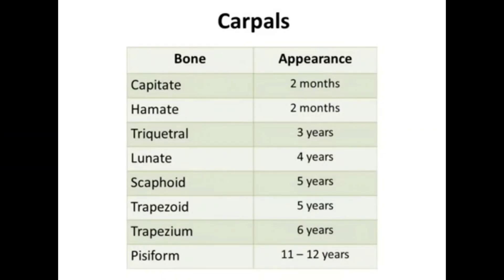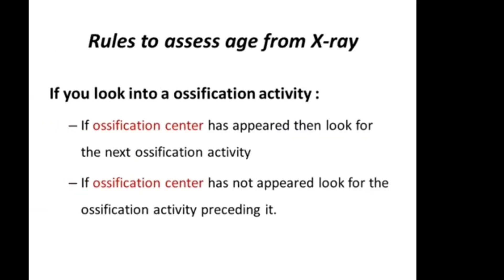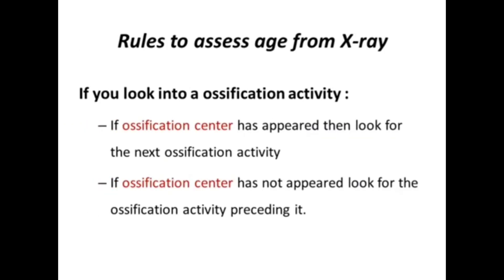So my mnemonic is Chatri Lust Trap: Chatri — capitate, hamate, triquetral; Lust — lunate, scaphoid, trapezoid; Trap — trapezium and pisiform. Appearance ages are: two months, two months, three years, four years, five years, five years, six years, and 11 to 12 years. Only capitate and hamate are in months; the remaining are all in years.